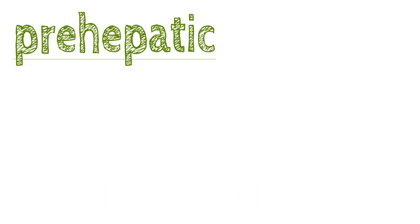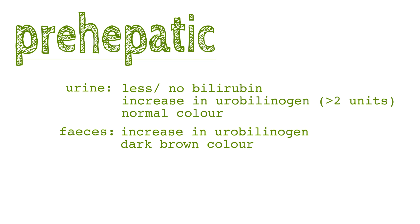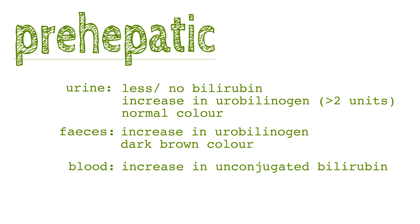Lab findings for prehepatic jaundice: the urine has less or no bilirubin present, an increase in urobilinogen, and a normal colour. Faeces have an increase in urobilinogen and a dark brown colour. The blood shows an increase in unconjugated bilirubin and an increase in total bilirubin.